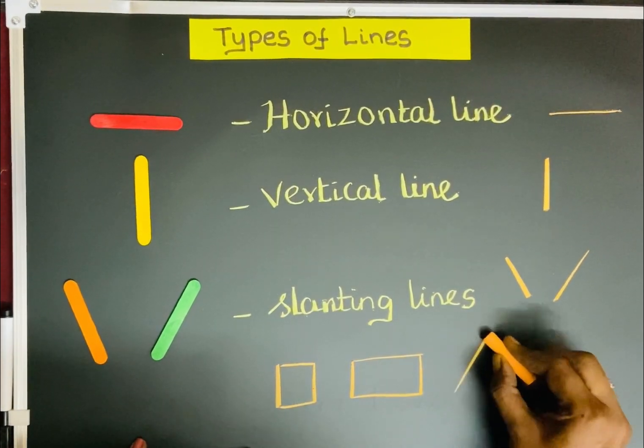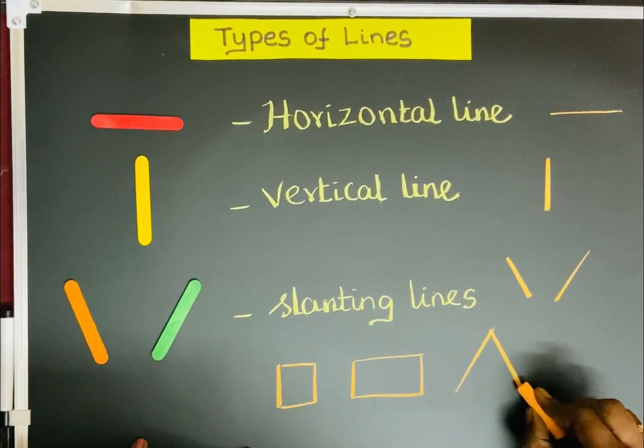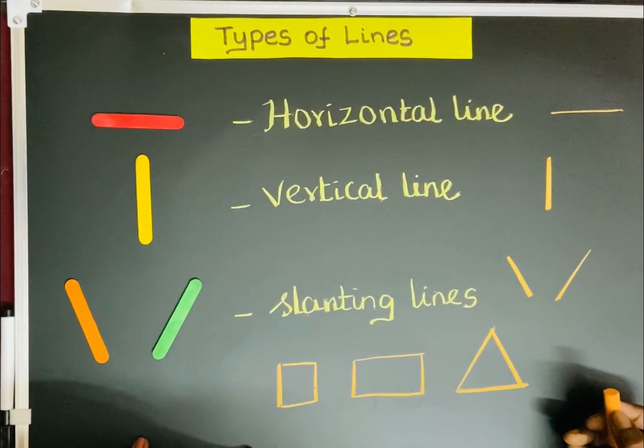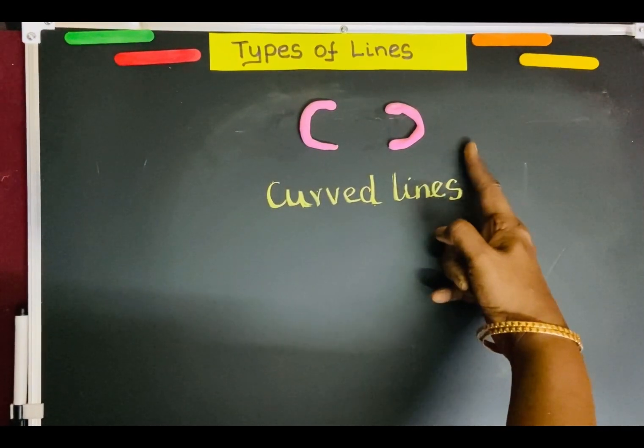Now triangle. Slanting line, slanting line, and horizontal line. These are curved lines.